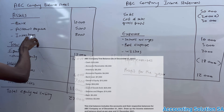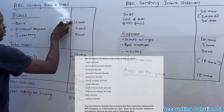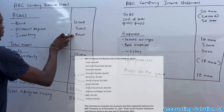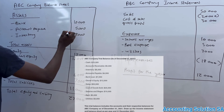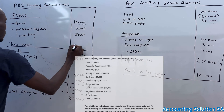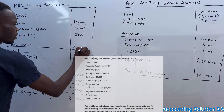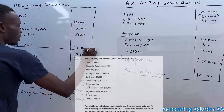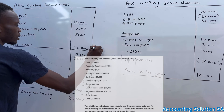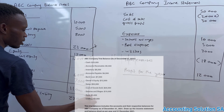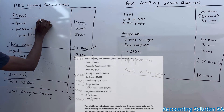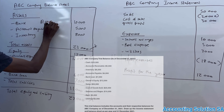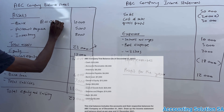Now let's check total assets: 10,000 plus 8,000 is 18,000, plus 5,000 gives us total assets of 23,000. Total assets must equal total equity and liabilities — this confirms the accounting principle: assets equals owner's equity plus liabilities.